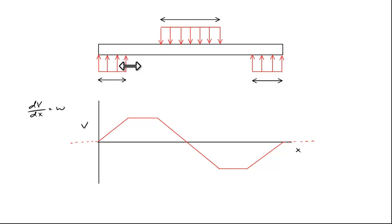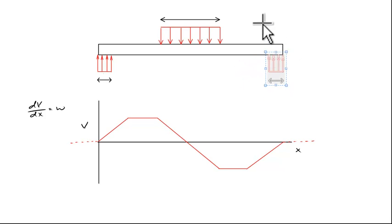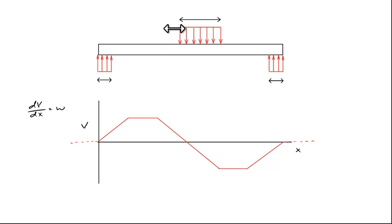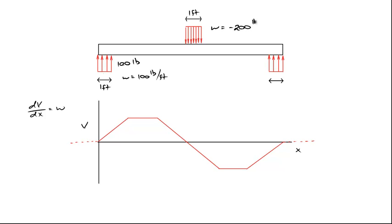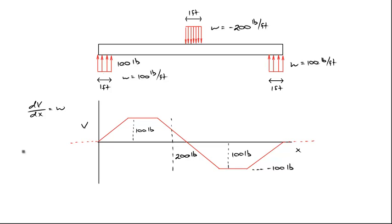Now let's examine a case in which instead of distributing each reaction load over two feet, we distribute it over one foot, and instead of spreading the 200-pound center load over four feet, we distribute it over one foot as well. So w in the center becomes negative 200 pounds per foot. The shear diagram will still reach 100 pounds on the left and drop to negative 100 pounds, but the slopes in each region become steeper — the rise and fall happen over a shorter distance.